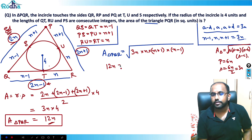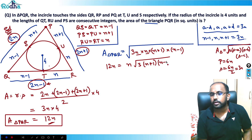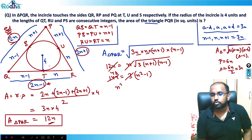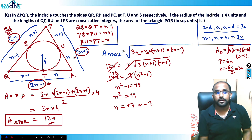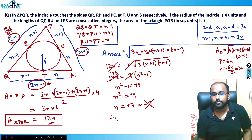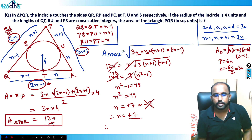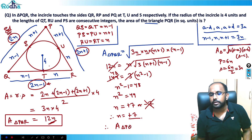Setting this equal to 12n: 12n = √(3n · n · (n+1)(n−1)). Squaring both sides: 144n² = 3n² · (n²−1). Dividing both sides by 3n²: 48 = n²−1, so n² = 49, giving n = 7 (rejecting n = −7 since lengths are positive). Therefore, area of triangle PQR = 12n = 12 × 7 = 84.